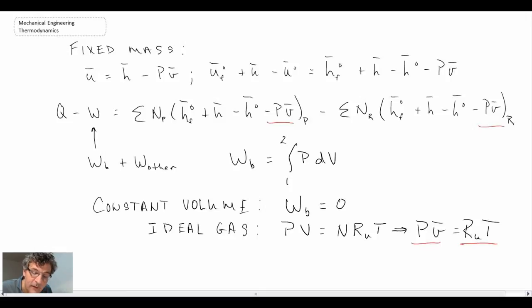The other process we may have would be constant pressure. For constant pressure, the boundary work is not equal to zero. It would be equal to P(V2 - V1), assuming we have a constant pressure process underway.